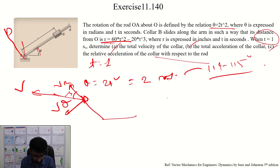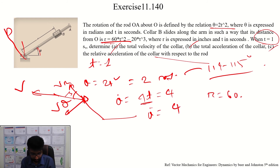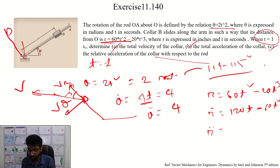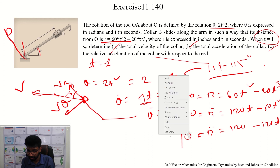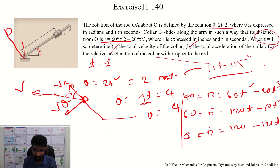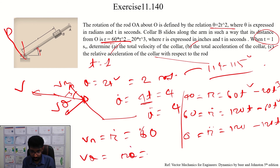If r equals 2t squared, then theta-dot equals 4t, and theta-double-dot equals 4. R equals 60t squared minus 20t cubed, and differentiating gives R-dot. At t equals 1: Vr equals R-dot equals 60 m/s, and V-theta equals R times theta-dot equals 40 times 4, giving the final velocity components.